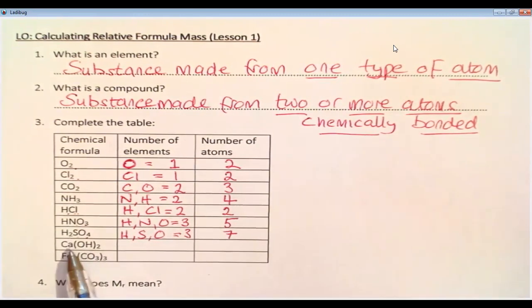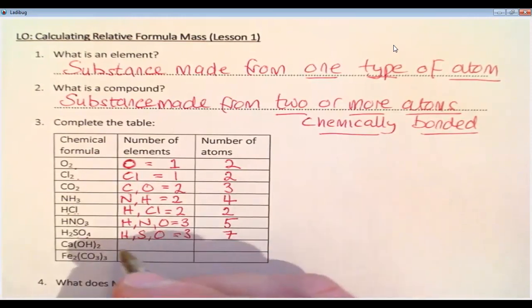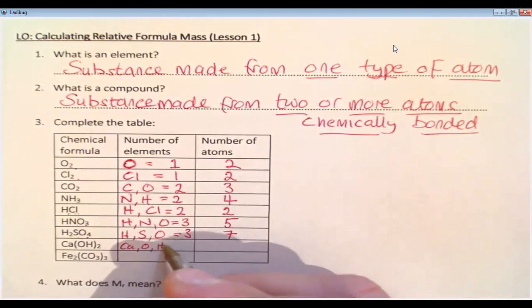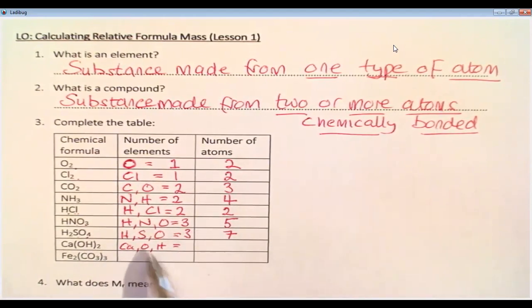And then slightly more tricky because you can see some brackets here. Let's do the elements first though. We have Ca, we have O, and we have H. Those are three elements. So then we need to be a little bit careful with these brackets. Same as you would do in maths. Whatever's inside the brackets, you times by what is outside the brackets. So for two outside the brackets, inside the brackets, we have one oxygen and one hydrogen. So times both those by two, that would be two oxygens and two hydrogens. That's four, plus the calcium. That's five.